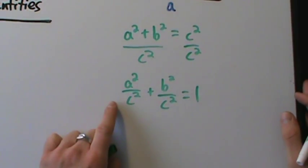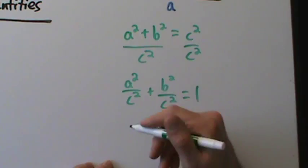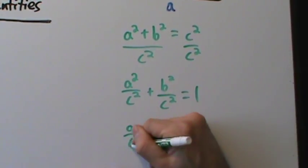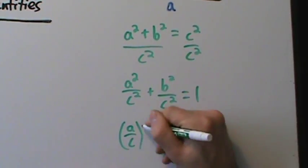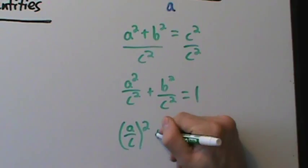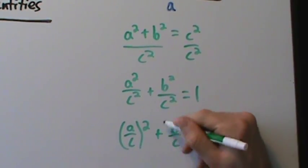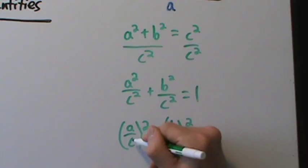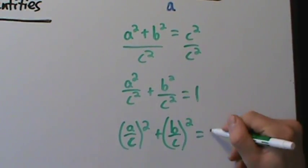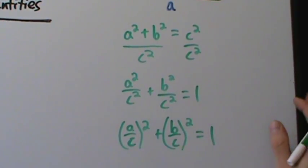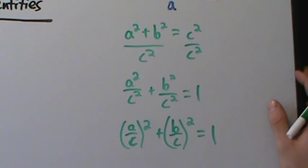Now I want to rewrite this. a²/c² is just the same thing as (a/c)², and b²/c² is (b/c)², and one is still just one. Now, a/c and b/c — what's special about those? What's significant about those?